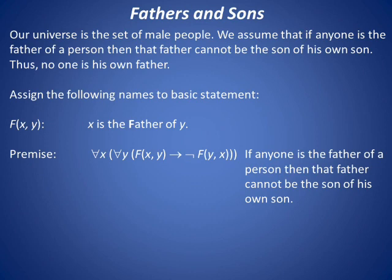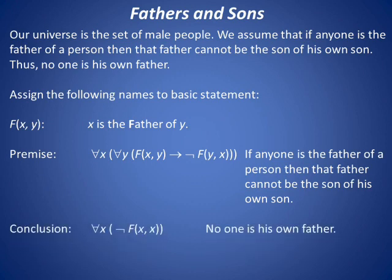For all X, for all Y, F of X and Y implies not F of Y and X. In English, that is, if anyone is the father of a person, then that father cannot be the son of his own son. The conclusion we seek is for all X, not F of X and X. That is, no one is his own father.